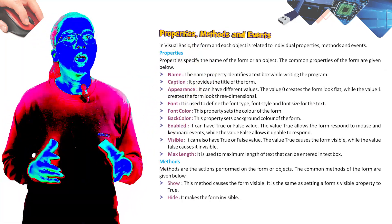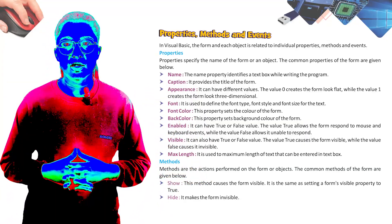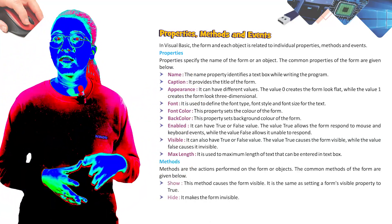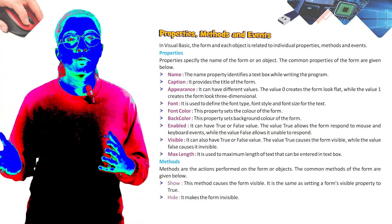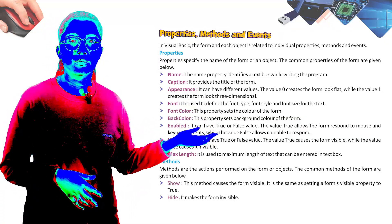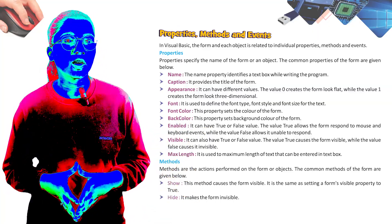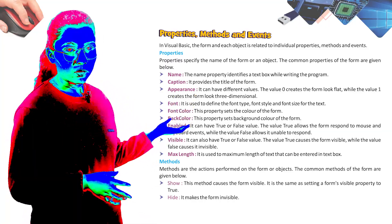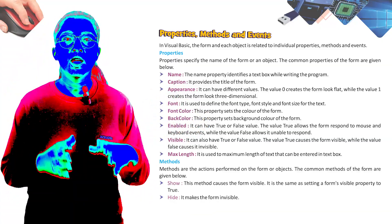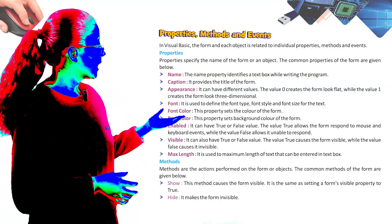Now let's start our next topic: Properties, Methods, and Events. In Visual Basic, the form and each object is related to individual properties, methods, and events. Properties specify the name of the form or an object. Some common properties of the form are: Name — identifies a text box while writing the program.